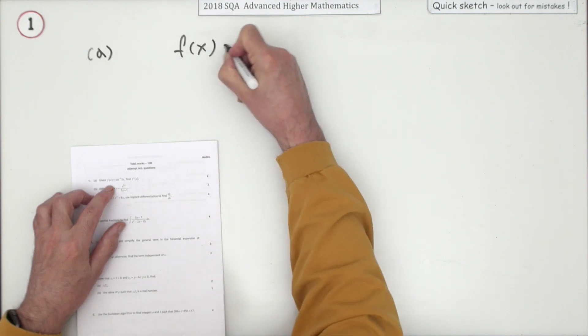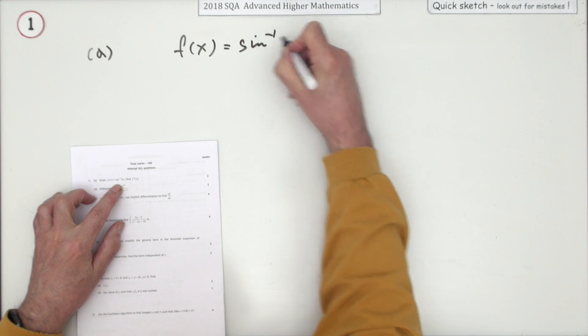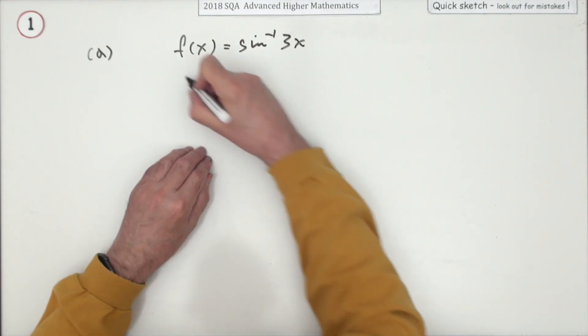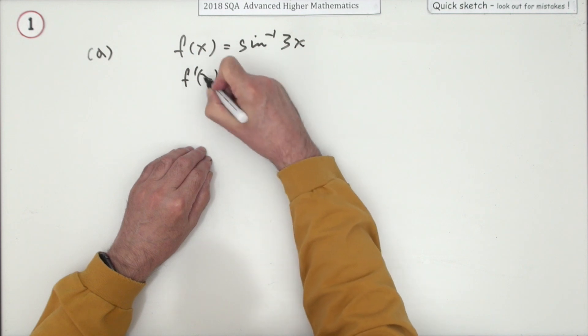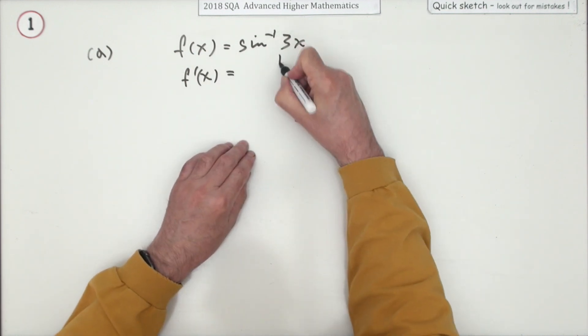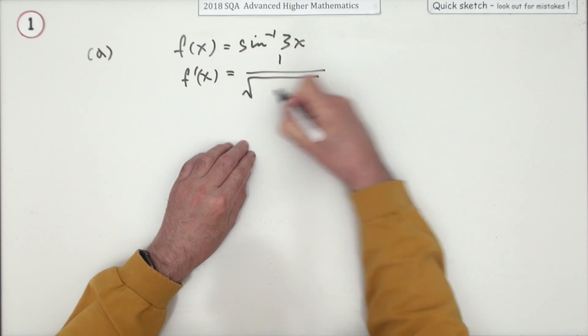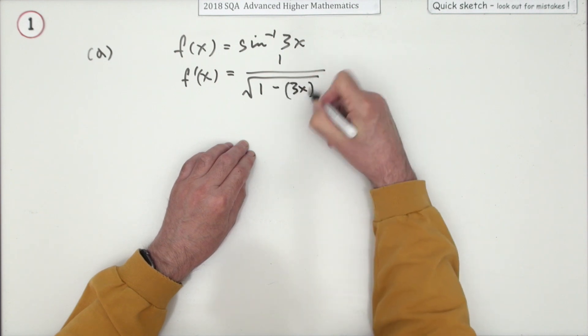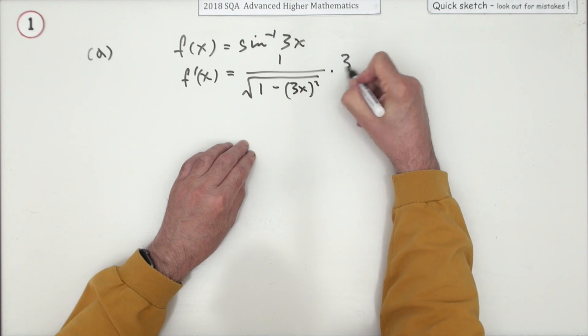What's the first one? Part A: f(x) equals inverse sine of 3x. Well that's just a function of a function. So the derivative for that is going to be the derivative for inverse sine, which is 1 over the square root of 1 minus whatever you fed into it. So that's 3x all squared, multiplied by the derivative of the inner part, which is just 3.